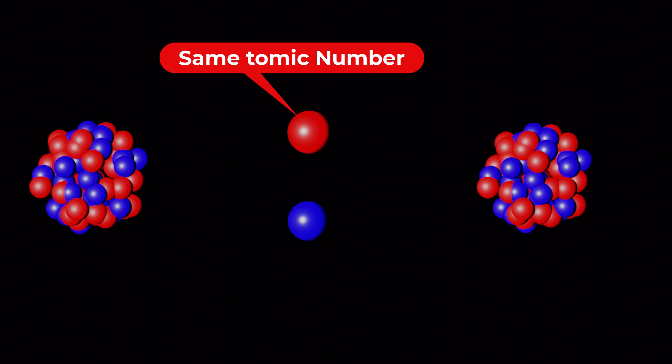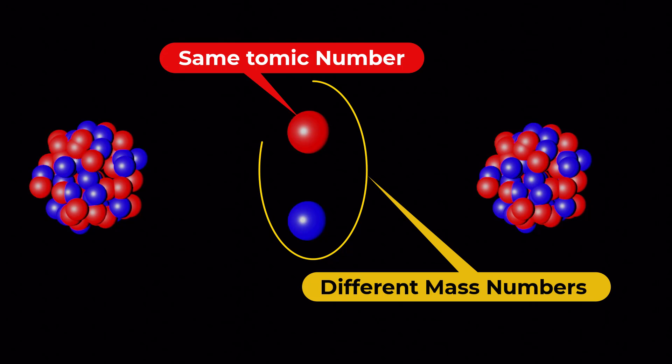Atoms that have the same atomic number but different mass numbers are called isotopes, which means isotopes of the same element have the same number of protons but different numbers of neutrons.